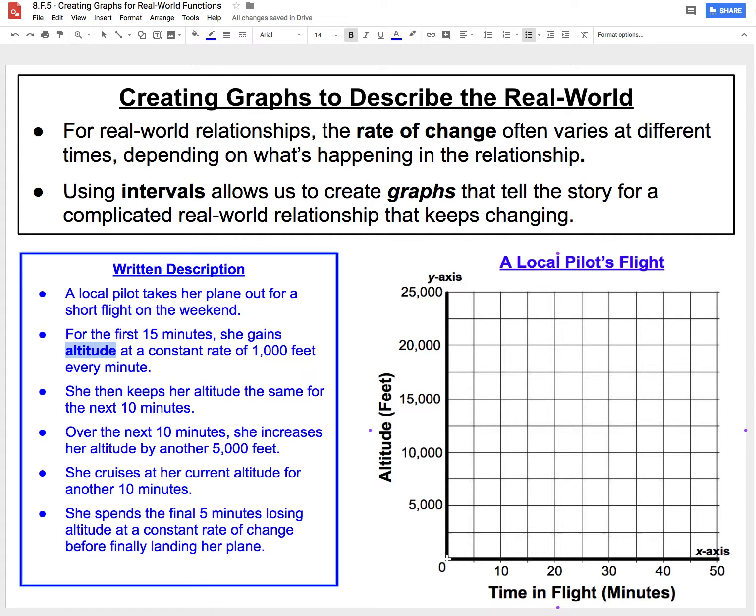She starts at 0 minutes, her plane's on the ground, her altitude's 0 feet. And for the first 15 minutes - 5, 10, 15 - she gains 1,000 feet every minute. 1,000 times 15 means after 15 minutes, when she's at this 15-minute mark, she should have gained 15,000 feet.